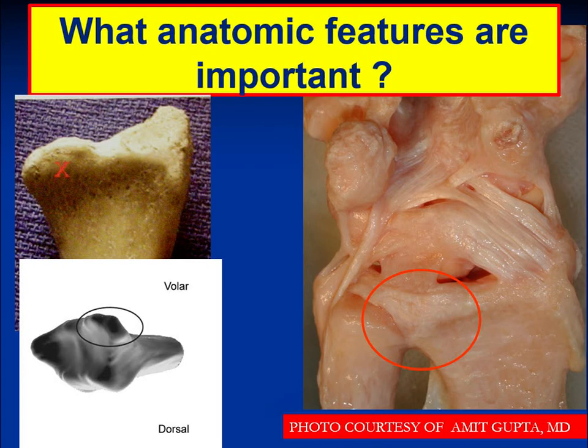The volar lunate facet, shown in this slide marked by the X and with the two circles, represents the intermediate column of the distal radius and bears the attachment of the short radial lunate ligament. In addition, as seen in the picture on the right, the radioscaphocapitate ligament attaches to the radial styloid on average about 7 mm ulnar to the tip of the radial styloid.